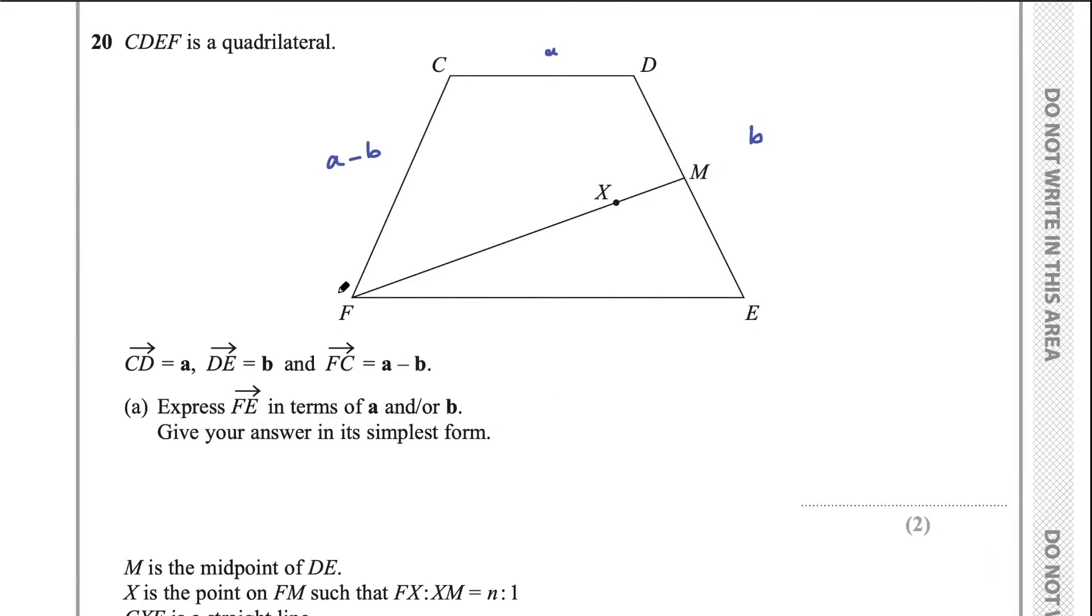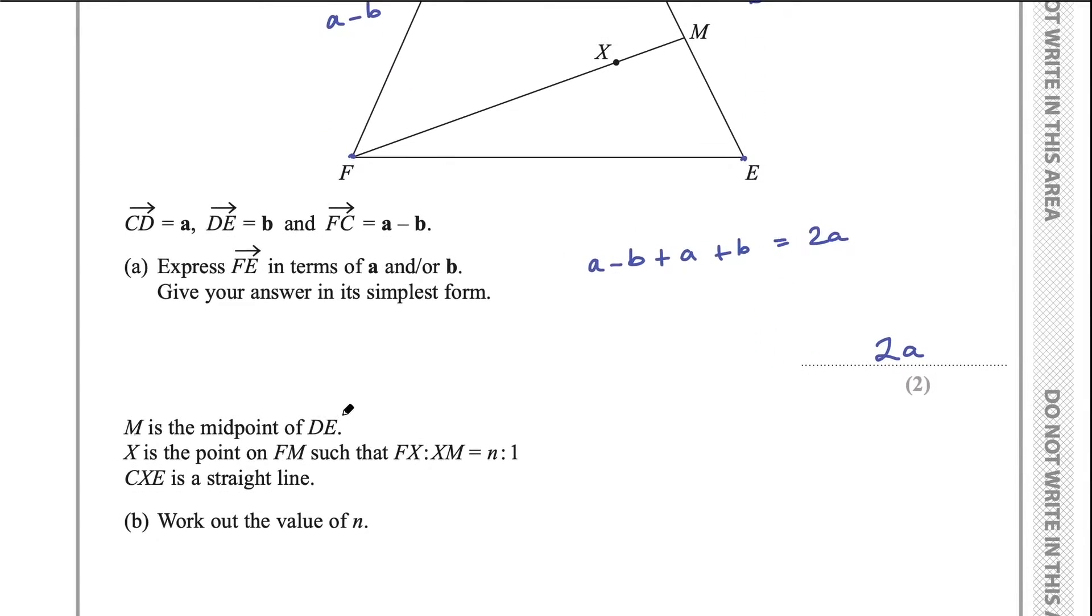So FE is this length down here. So if we want to go from F to E, we could go up and around. So we would have a take b plus a plus b. And then this equals a plus a is 2a and negative b plus b, they cancel out. So the final answer there is 2a. So part A, there shouldn't be really any issues with part A, but let's move on to part B.